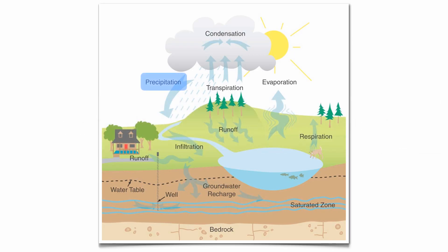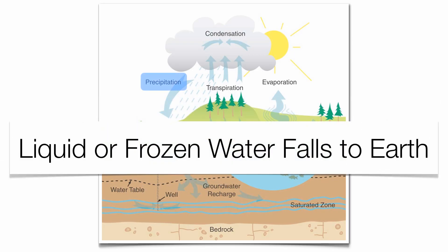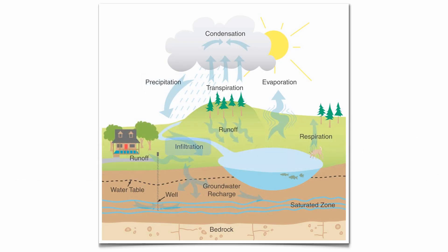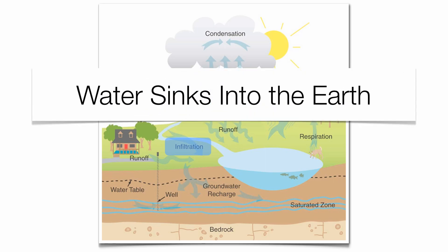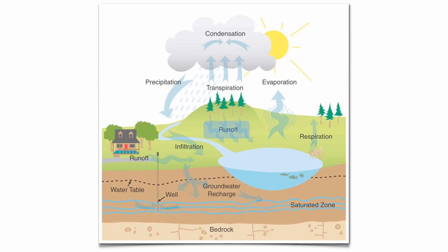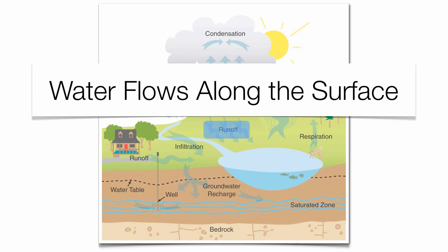Get enough condensation, you'll end up getting precipitation. That's when liquid or frozen water is going to fall to the surface. Once that water falls to the surface, it can do one of two things. It can either infiltrate, which means it's going to sink into the earth, or that water is going to travel as runoff along the surface.